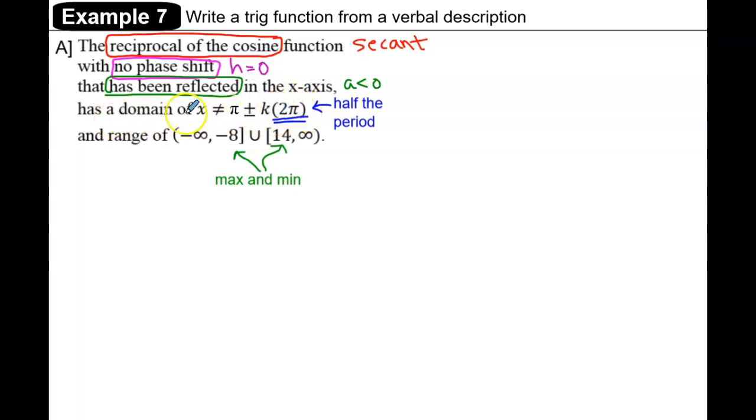Remember, when you're looking for asymptotes, which constitute the domain restriction, the multiplier on k is half the period. So if half the period is 2π, then the period of this secant graph is 4π, and we can use that to find the b value.